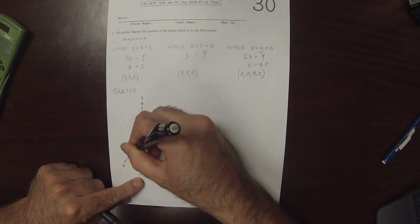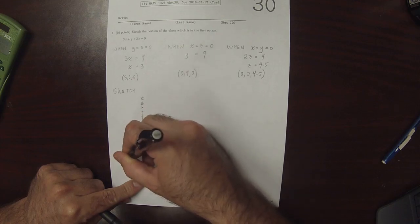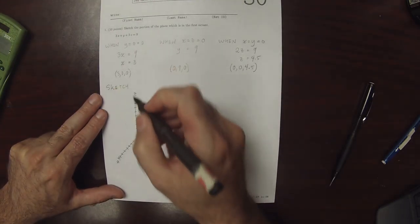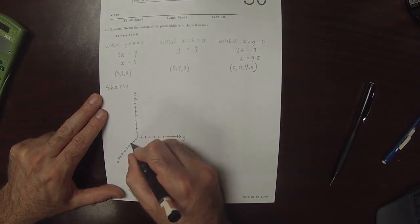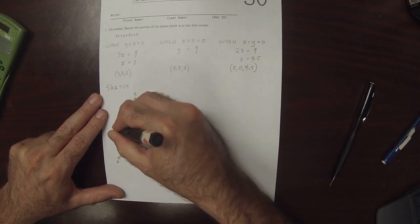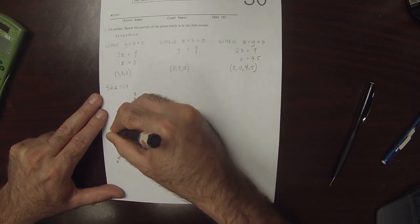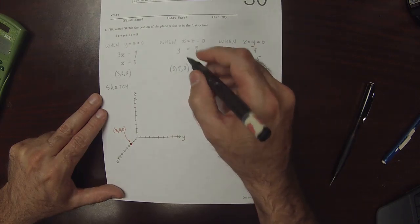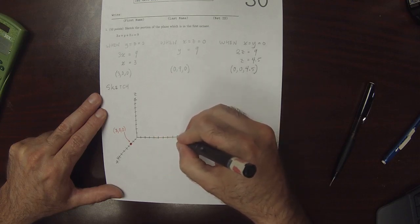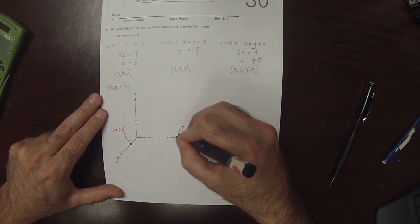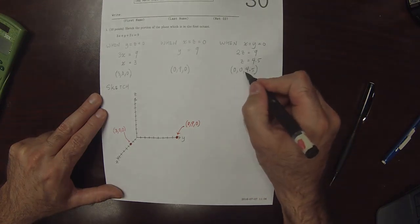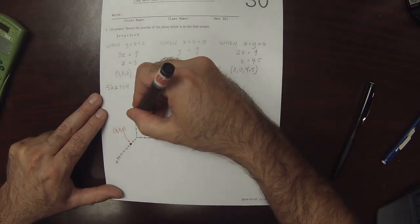The point (3,0,0) is at 3 on the x-axis. The point (0,9,0) is at 9 on the y-axis. And the point (0,0,4.5) is at 4 and a half on the z-axis.